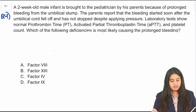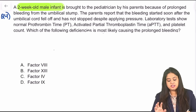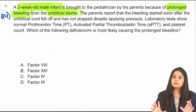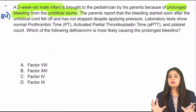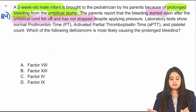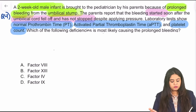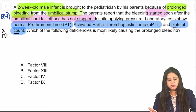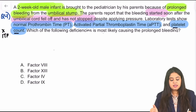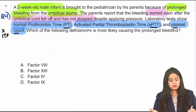Question 4 is a topic most students struggle with. A two-week-old male infant has prolonged bleeding from the umbilical stump. The PT is normal, APTT is normal, and platelet count is also normal. Since platelet count is normal, ITP and thrombocytopenia are ruled out. With both PT and APTT normal, both the intrinsic and extrinsic pathways appear normal — so what exactly is the problem?